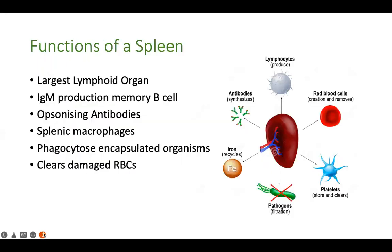The first question is: why is the spleen so important? The spleen is the largest lymphoid organ and it is the site of IgM production. The earliest clearance of bacteria from the systemic circulation happens with the help of IgM. It is also the place where you have memory B cells. In the white pulp, you have a lot of lymphocytes, and another important function of the spleen is phagocytosis of encapsulated organisms.